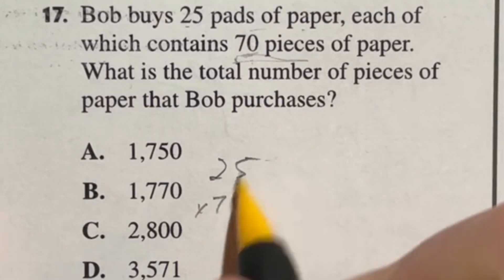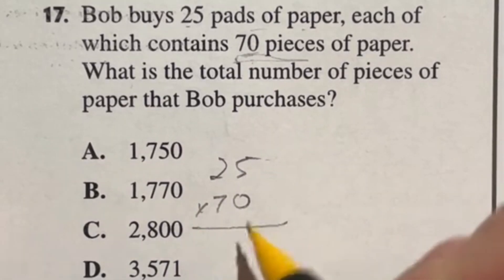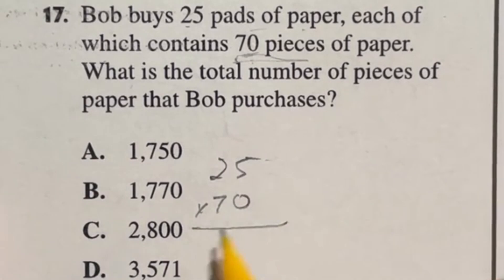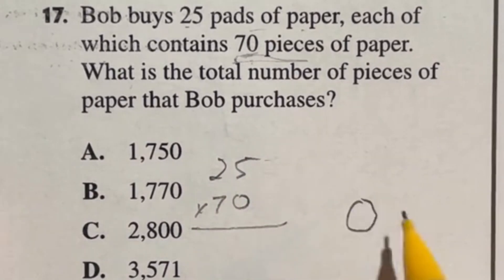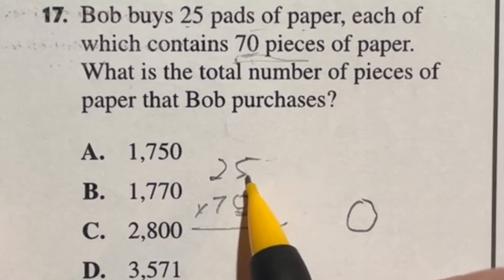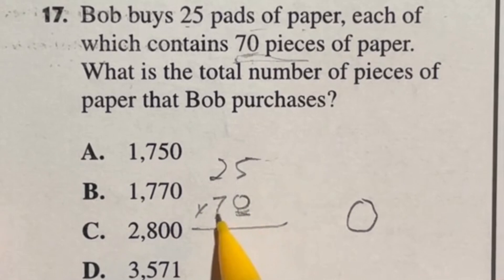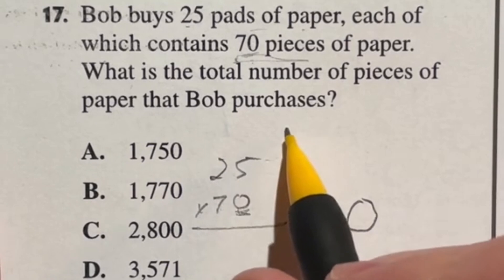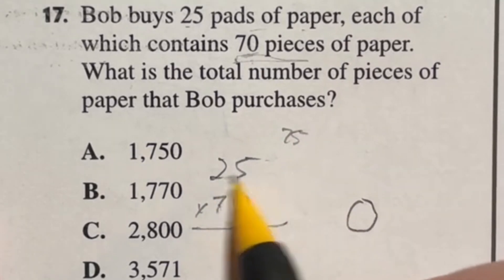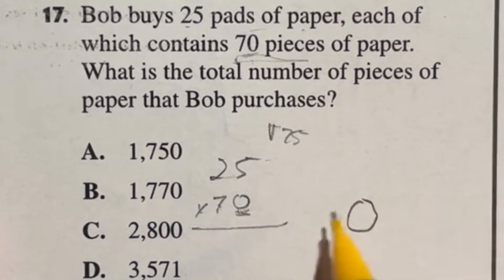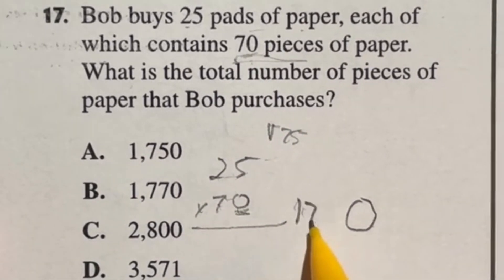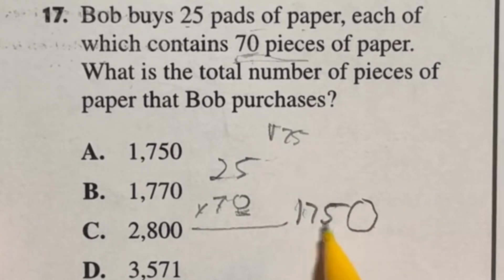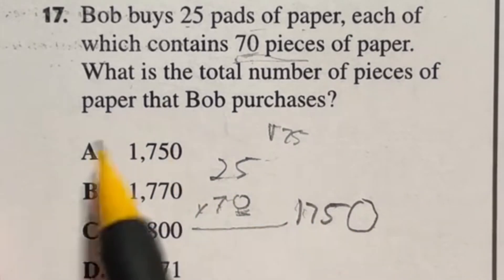So in this case we're going to end up doing 25 times that 70. Now notice I did line this up as though I'm going to do it the long way for multiplication, but in this case you actually don't. When you're multiplying the long way you just put a 0 on the end. We know 4 times 25 is going to give us 100 and then we have 3 more 25s after that to bring us up to 75. So that means 7 times 25 is going to be 175. So if I take that answer and put it out in front of my 0, it gives me 1,750 for a final answer of A.